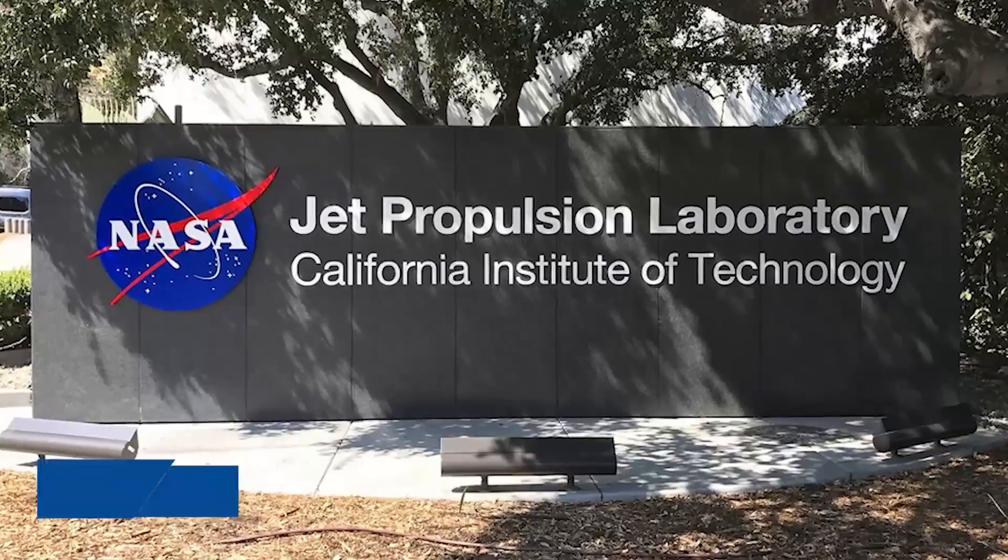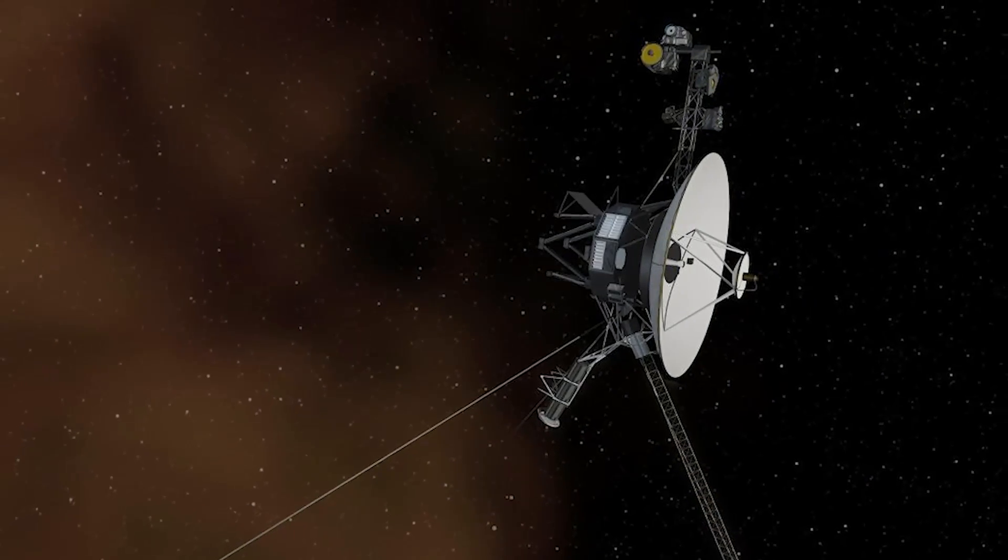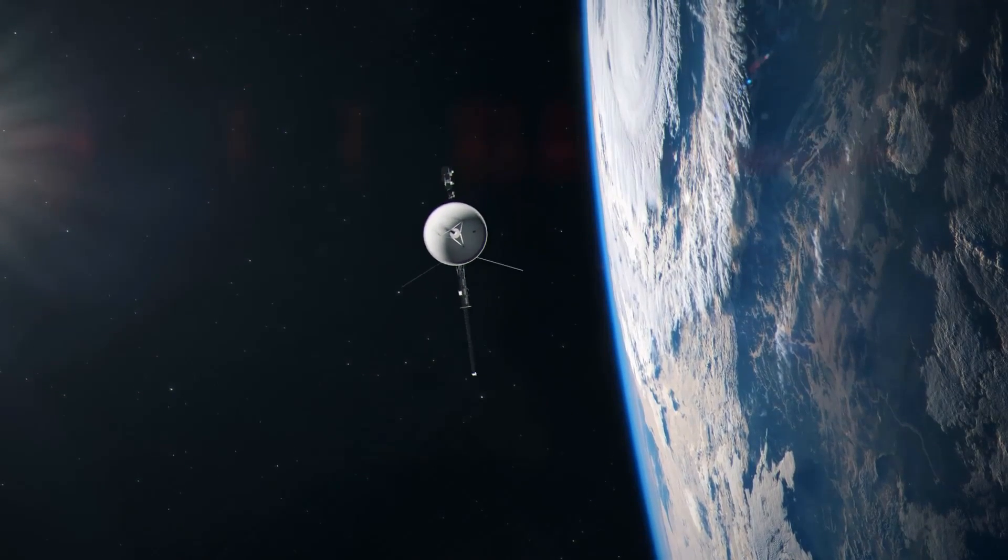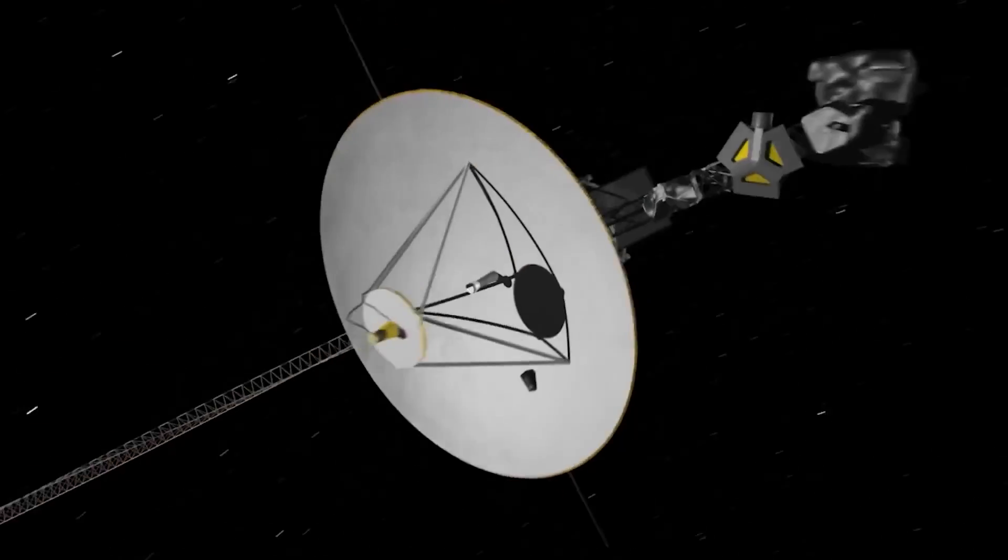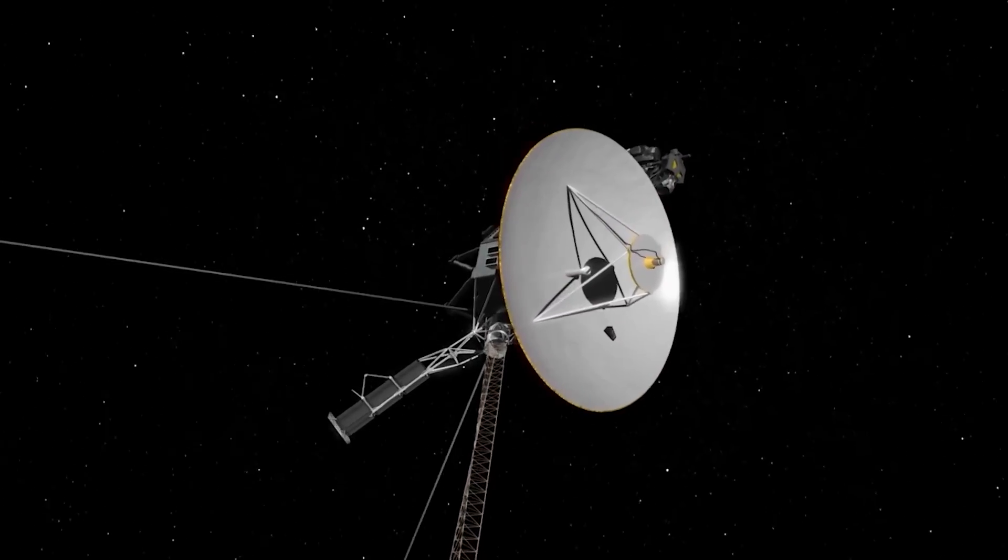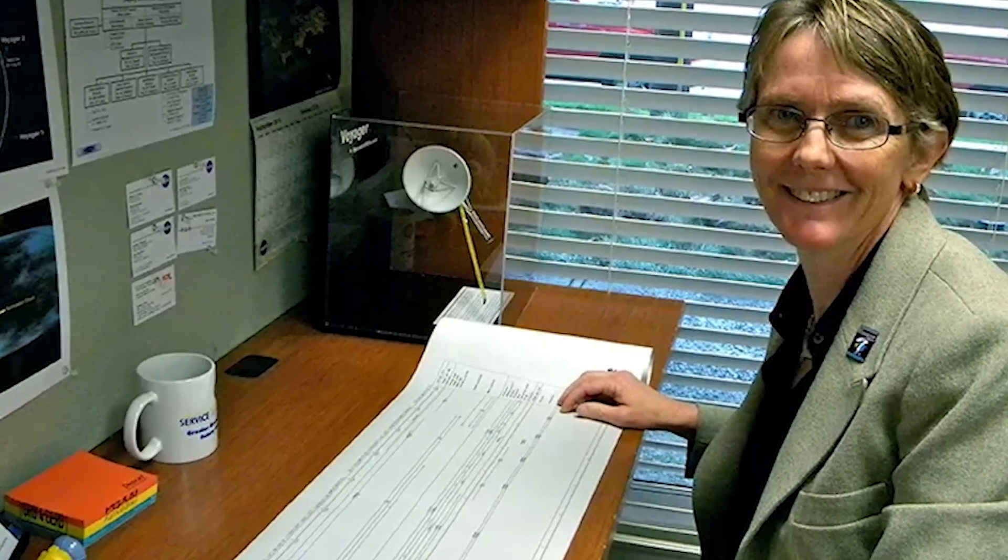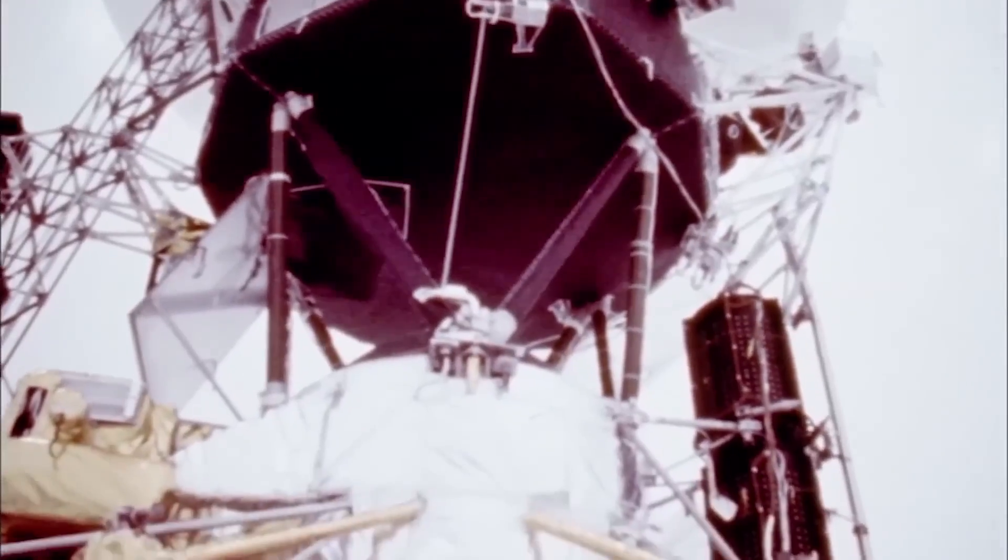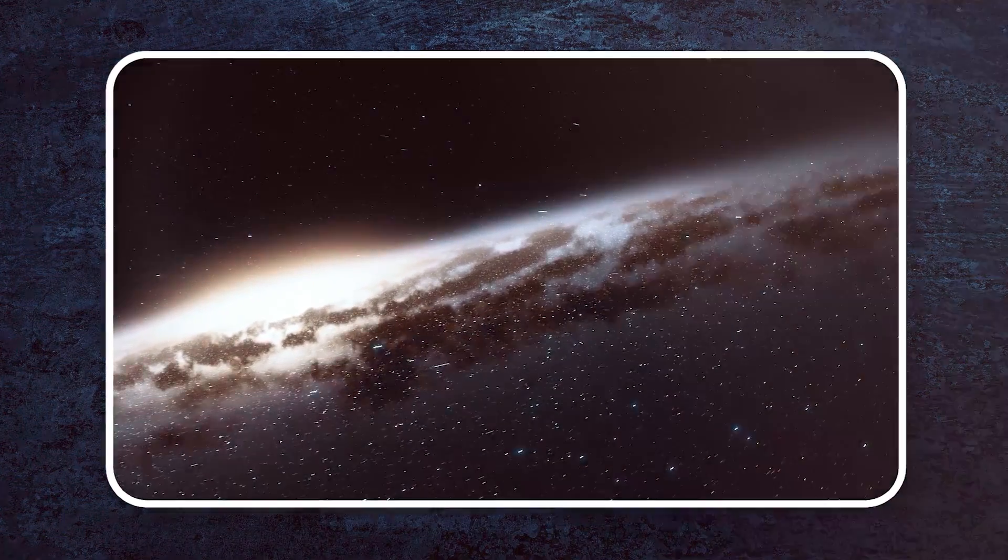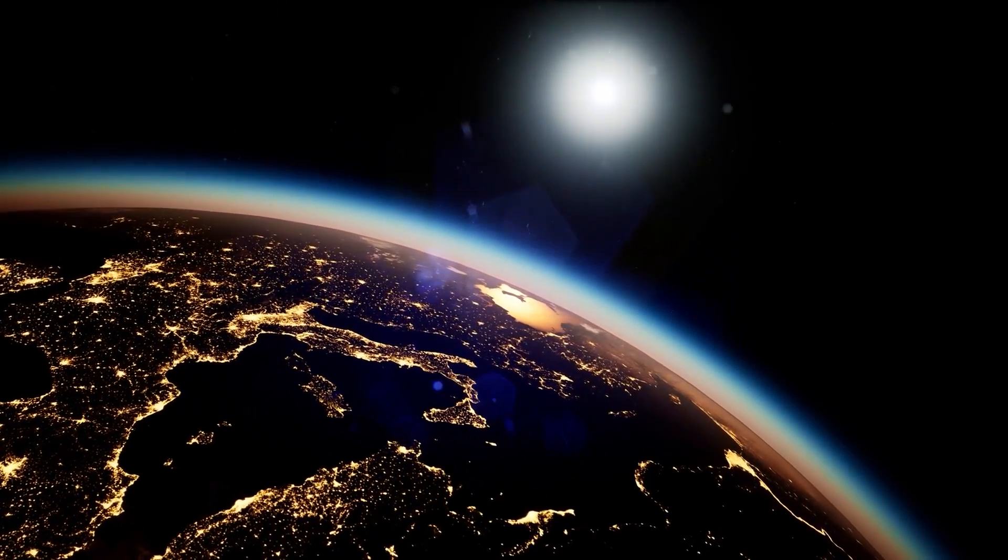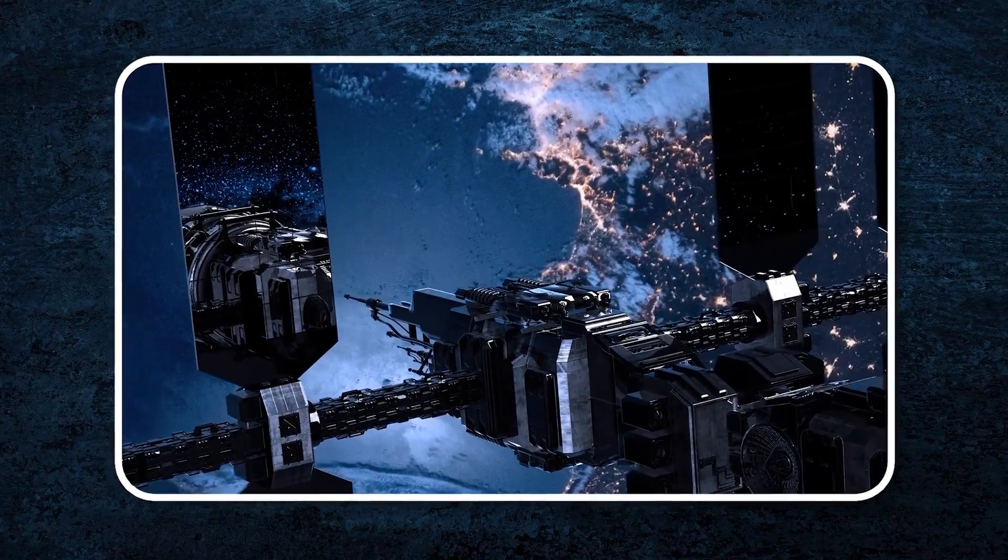But here's where it gets stranger. In May 2022, NASA's Jet Propulsion Laboratory shared unsettling news. Voyager 1 had started sending back data that simply didn't make sense. The signals indicated a misalignment between the spacecraft's orientation system and its actual position, almost like it was lost in a way it shouldn't be. Despite this, Voyager 1 continued its journey, undeterred, as if nothing was wrong. Was it merely a glitch, or was something, or someone, interfering? Voyager 1 was, after all, over 45 years old, hurtling through regions of space no other human-made object had ever ventured into.